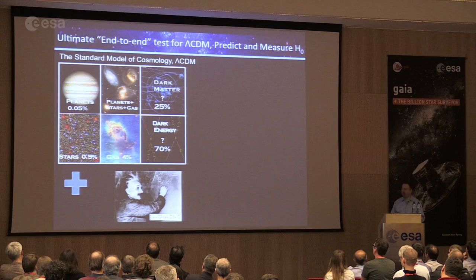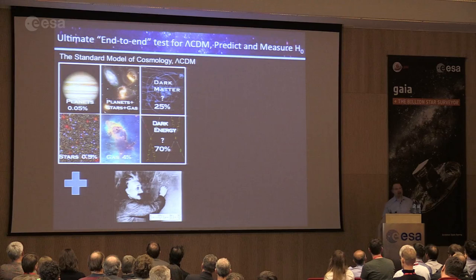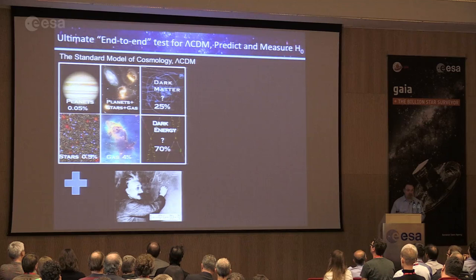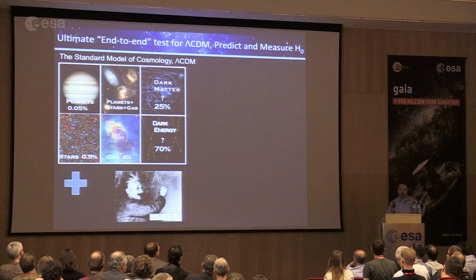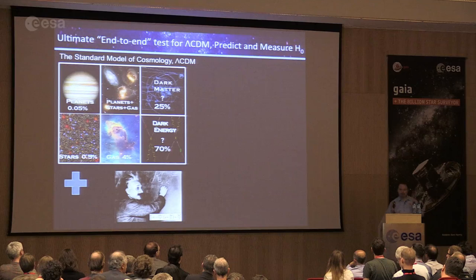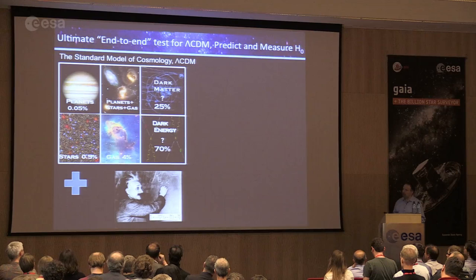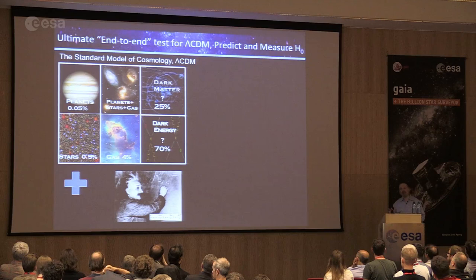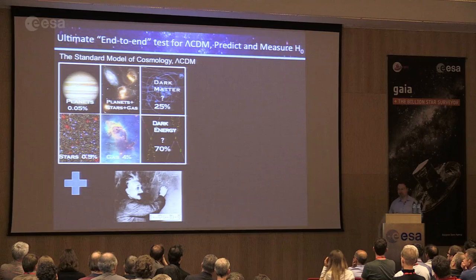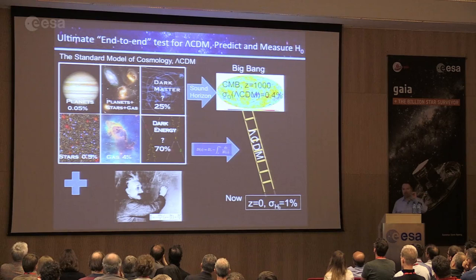Our naive assumptions about dark matter: it's cold, collisionless, has no interactions, and is stable. For dark energy, we assume it is exactly the cosmological constant — not changing with time. We assume the universe is exactly flat, that there are exactly three neutrino species from nuclear physics, and a few other details. These assumptions let us then predict the size of fluctuations in the radiation left over from the Big Bang — the cosmic microwave background.